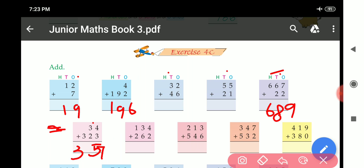Now this part. 4 plus 2, 6. 3 plus 6, 9. 1 plus 2, 3. Answer is 3, 9, 6.